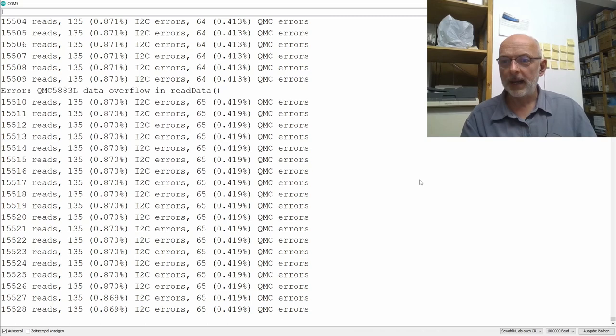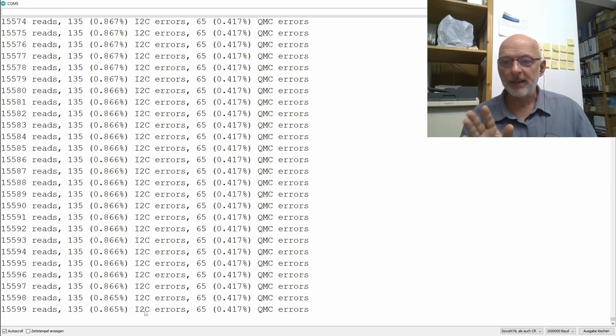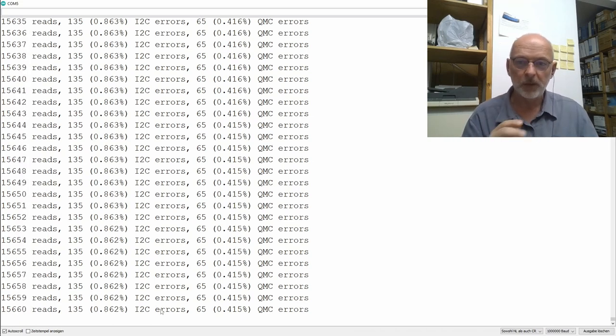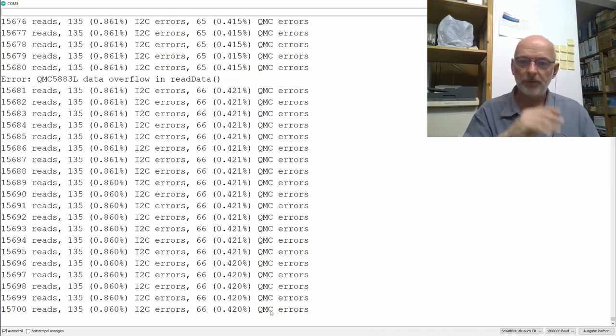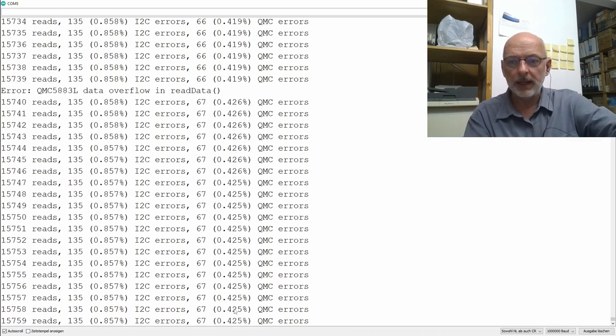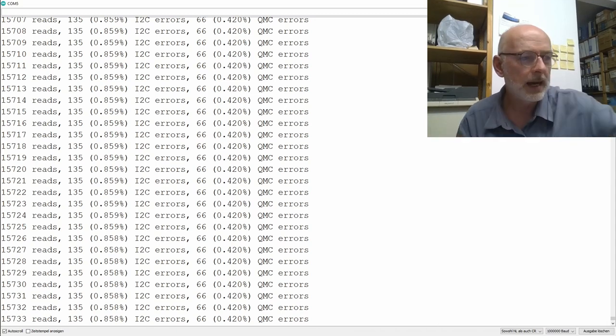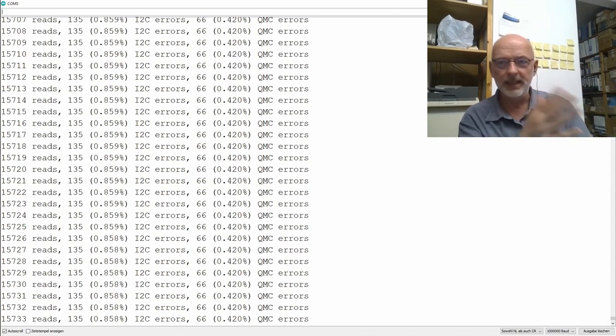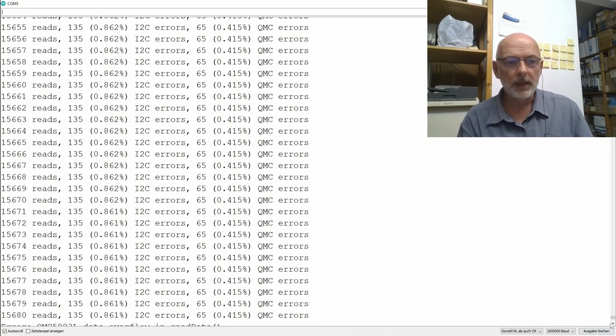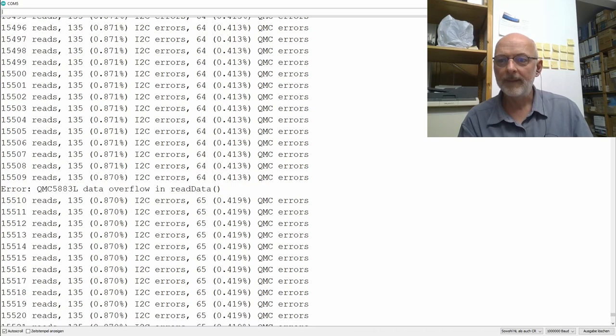Let's have a look at the serial monitor. I waited a while until I had a nice big number of reads, 15,000 now. You see we have 135 I2C errors, so about 0.8% of my reads have an I2C error. And 65 QMC out-of-range errors, about 0.4%. Now I'm pulling the plug. I have no idea why you have data overflow errors. That shouldn't be the case because it's just sitting on my desk, no magnet nearby.